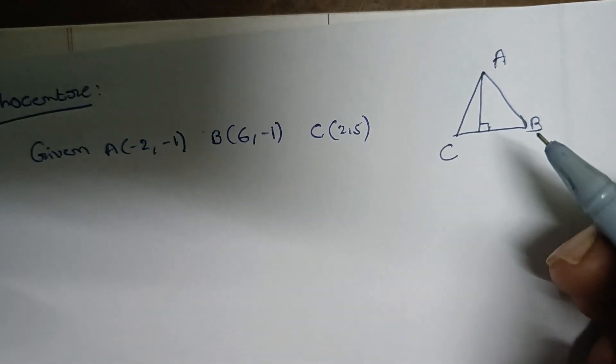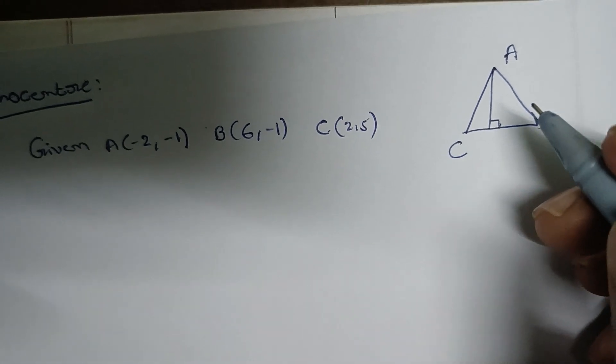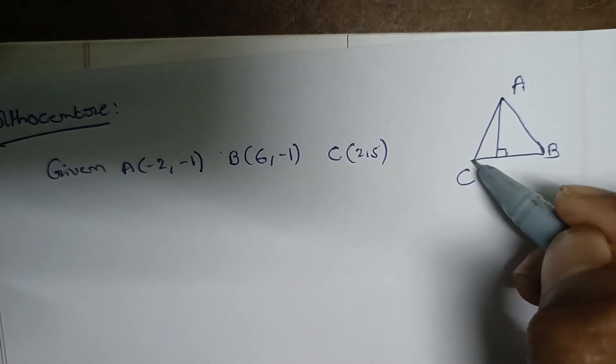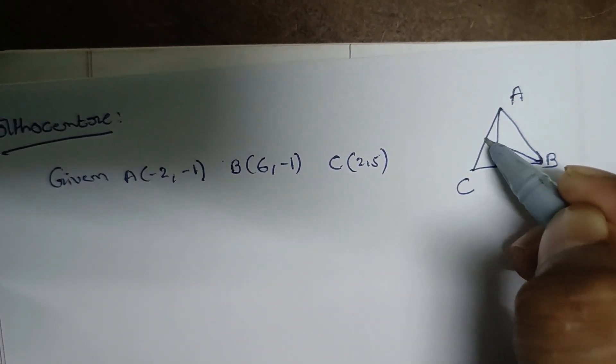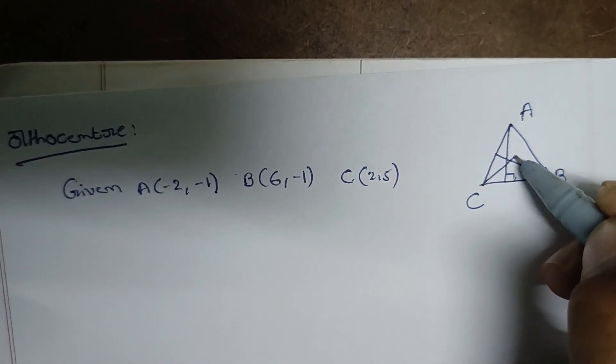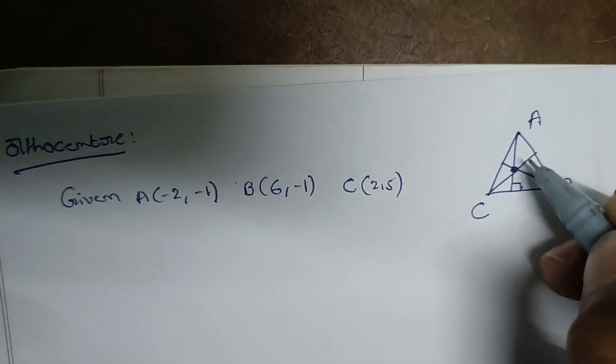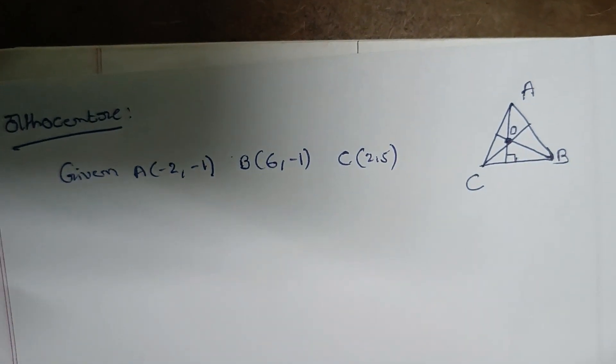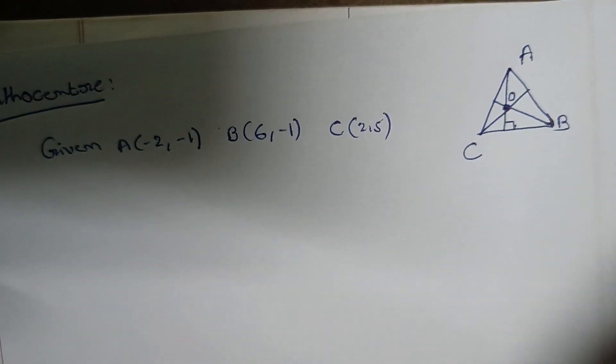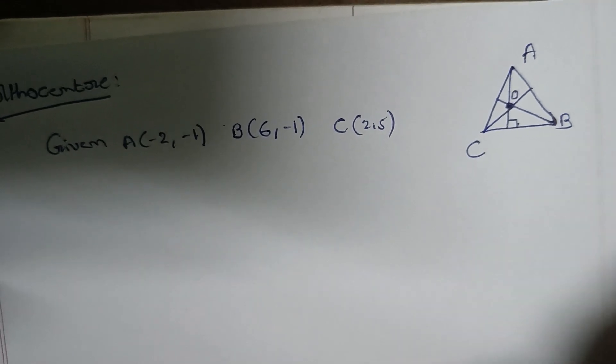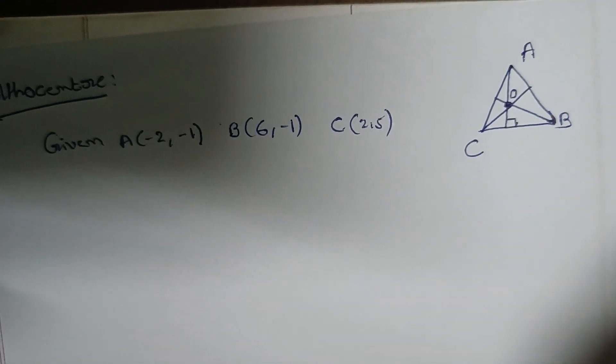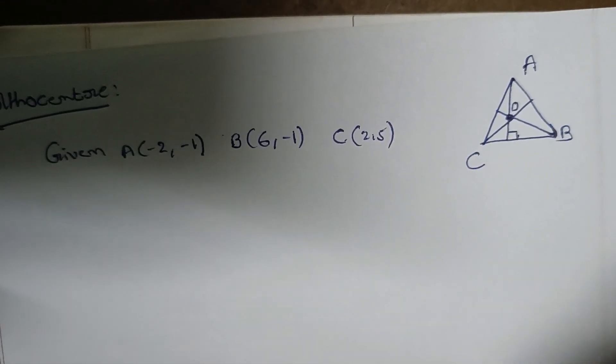In a triangle, when you draw a perpendicular line from each vertex to the opposite side, that line is called an altitude. The point where these three altitudes intersect is called the orthocenter. The orthocenter is the point of intersection of altitudes, or heights, in a triangle.